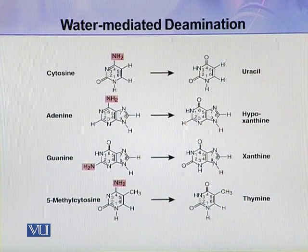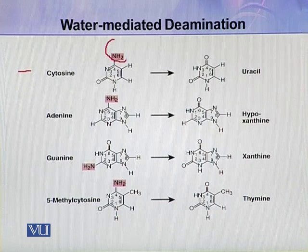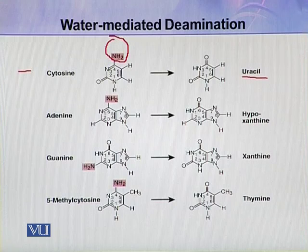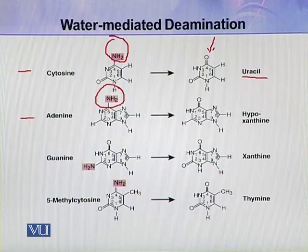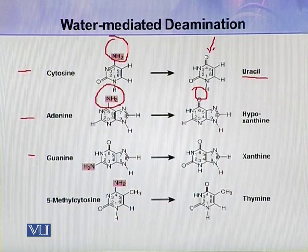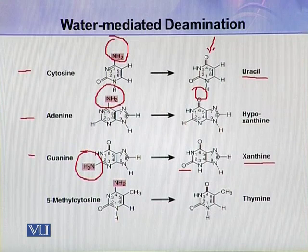Here you can see different examples of deamination. In the case of cytosine, the amino group is removed and cytosine is converted into uracil — the amino group is deleted. In the case of adenine, the amino group is removed and adenine converts into hypoxanthine. In the case of guanine, the amino group is removed and the resulting base is xanthine.